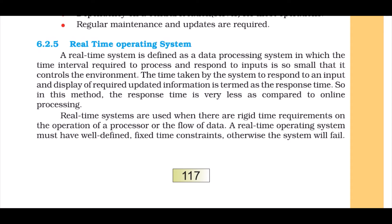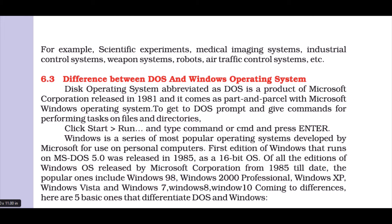Real-time systems are used when there are rigid time requirements — when you are working on something and time is very important, such as any science experiment or factory machines. If the time shifts from 1 second to 2 seconds, the machines will not collaborate with each other and the product will be destroyed. Examples include medical imaging, X-ray, CT or MRI machines, industrial control systems, weapons systems, robots, and air traffic control systems — all are time-managed. Even a delay from 1 second to 2 or 5 seconds would jeopardize the system and put everything in chaos.